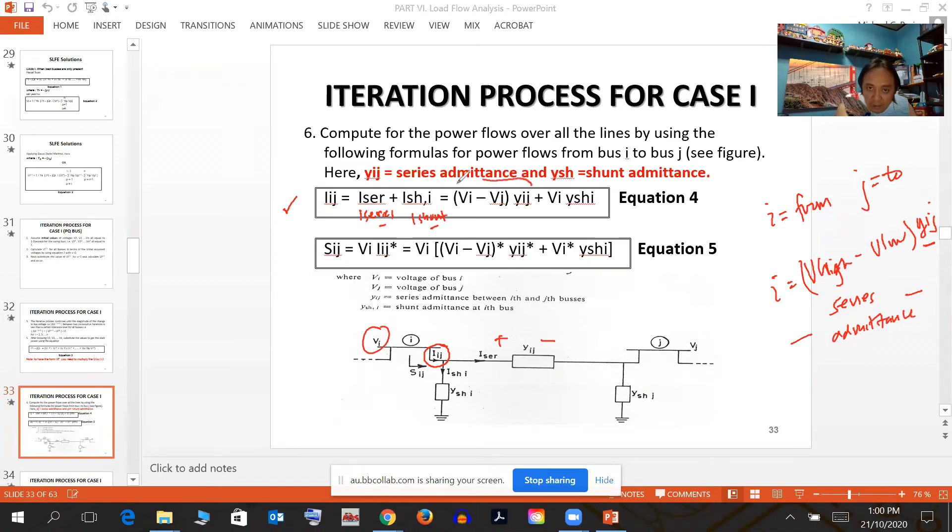Because this form is V conjugate I form. The conjugate is just for reference purpose only. The others here: computing current from bus i to j. Current from bus i to bus j, you can use this relationship. I series is the series current, I shunt is called I_SH.